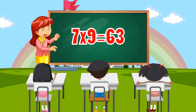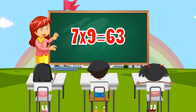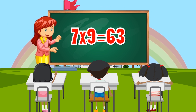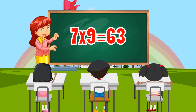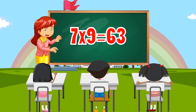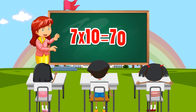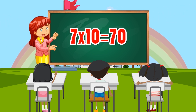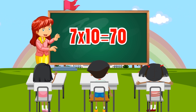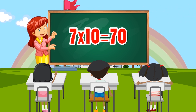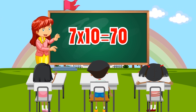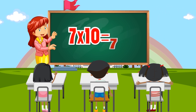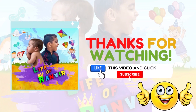7 times 9 equals 63. 7 times 10 equals 70.